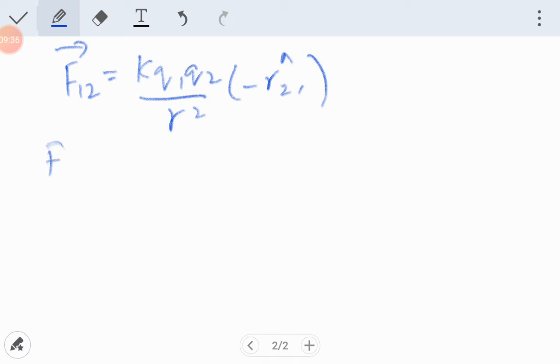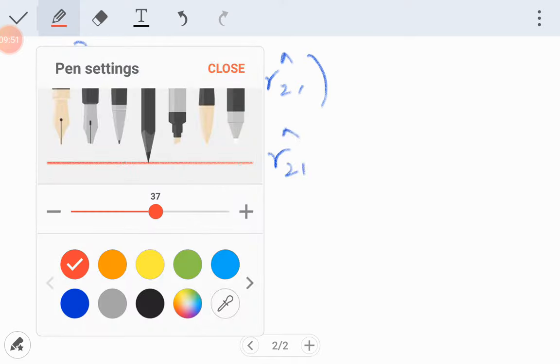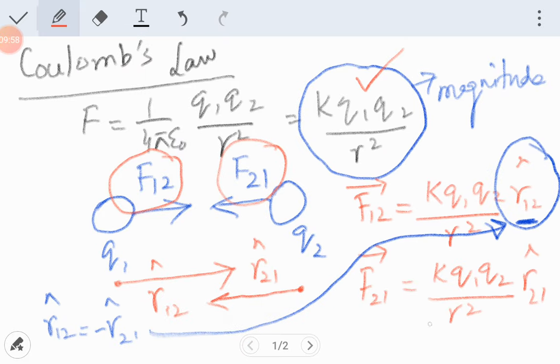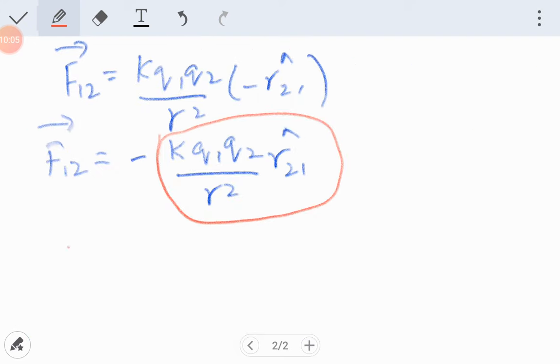Now bringing this minus to the start, it will be minus K q1 q2 over r² r̂₂₁. Now we see that this is the value of K q1 q2 over r² r̂₂₁, which is the value of F₂₁. So I put that value: F₁₂ vector is equal to minus F₂₁.